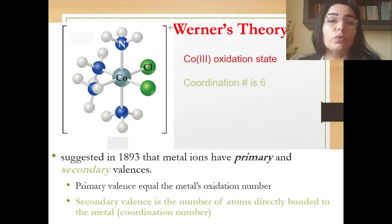For an explanation of this phenomenon, Swiss chemist Werner in 1893 developed a coordination theory, the fundamentals of which are the following. Werner suggested in 1893 that metal ions have primary and secondary valences. Primary valence is equal to the metal's oxidation number. Secondary valence is the number of atoms directly bonded to metal, the coordination number. In this example, oxidation number for cobalt is plus 3 and coordination number for this complex compound is equal to 6.